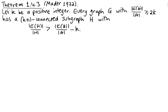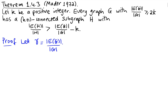First, let's introduce some notation for the density of G: the number of edges of G divided by the number of vertices, which we denote by absolute value bars around G, and we call that γ. By assumption, γ is greater than or equal to 2k.